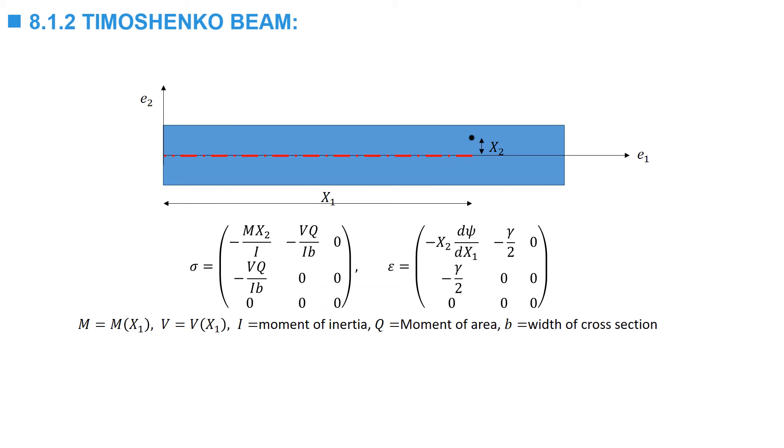After the boundary conditions are specified and the deformation functions are found, the stresses along the beam can be given by this stress matrix, exactly similar to the Euler-Bernoulli beam. And the strain matrix is given by this form. The only difference between this strain matrix and the one that appeared in the Euler-Bernoulli beam is the existence of this shear strain.